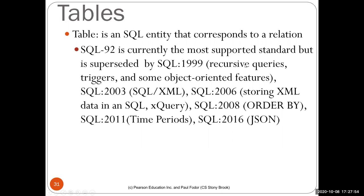SQL 1999 supports recursive queries — you can create a transitive closure by looking at all edges in a table — as well as triggers and some object-oriented features. SQL 2003 included XML support, and 2006 added storing XML into a database with XQuery. SQL 2008 extended ORDER BY, SQL 2011 introduced time periods for date range checking, and SQL 2016 added JSON support. MariaDB supports basically SQL 92, but not many of these newer features — for instance, you cannot store JSON in MariaDB... actually, JSON is supported.